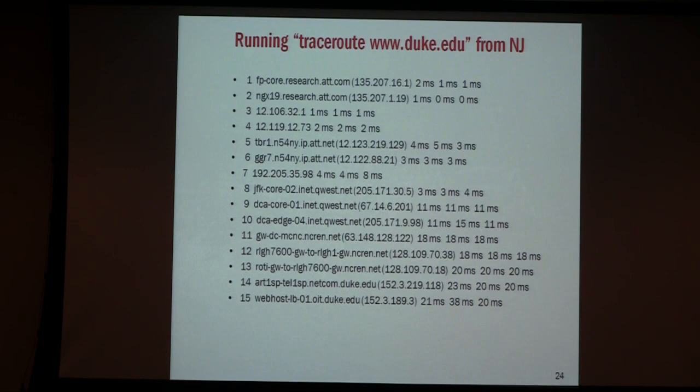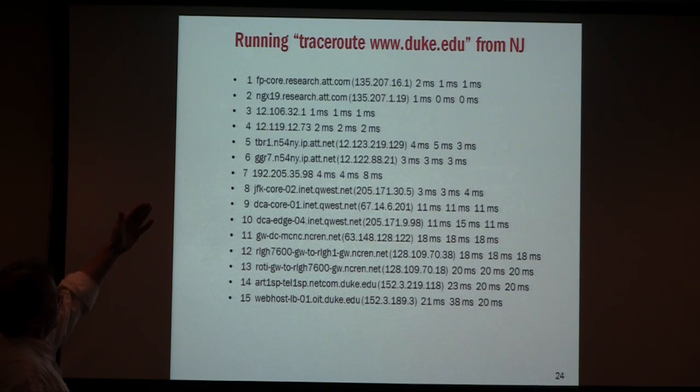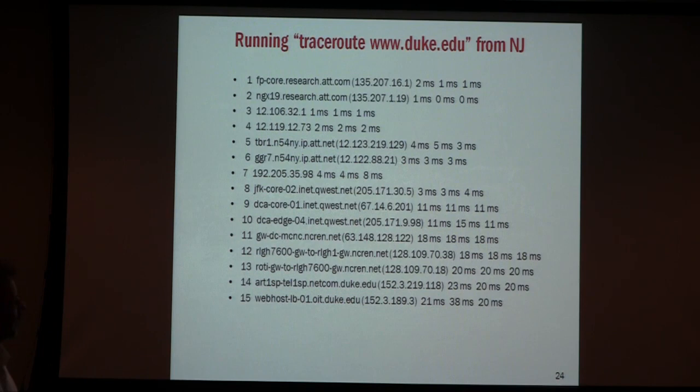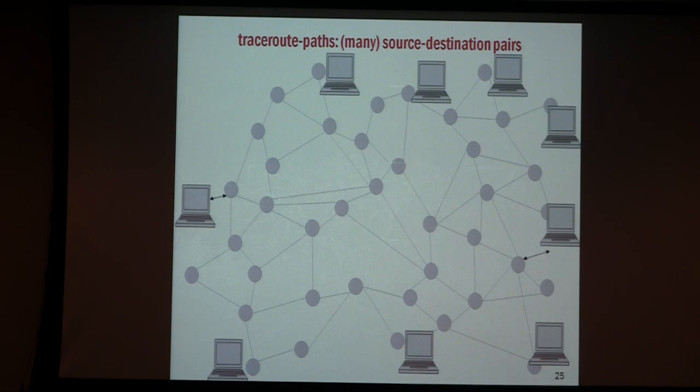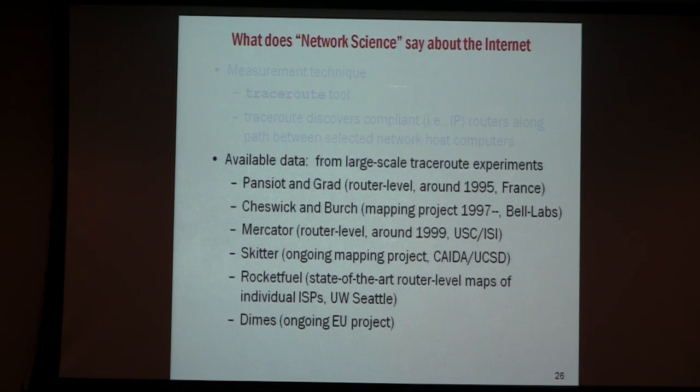This is what you get from traceroute: from entities in Germany to you, you go through roughly 15 hops. The picture makes sense because that is what the traceroute shows you. If you had more measurement points, you get all this data, and this kind of large-scale measurement work has been going on since the late 90s and is still ongoing.